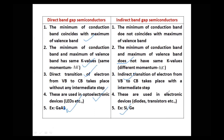Indirect bandgap semiconductors are used in pure electronic devices such as diodes, with germanium and silicon as examples. These are the basic definitions and understanding of direct and indirect bandgap semiconductors — their features and differences.